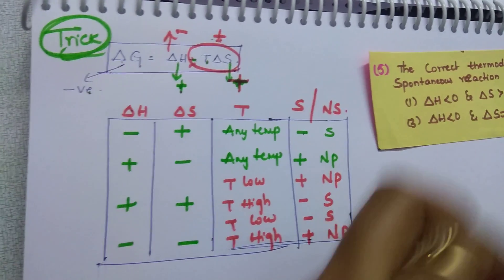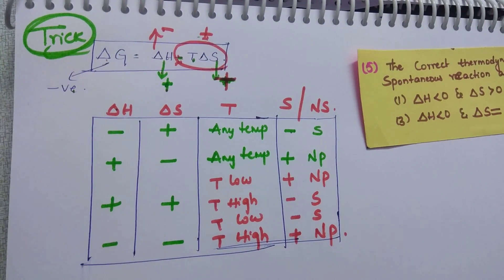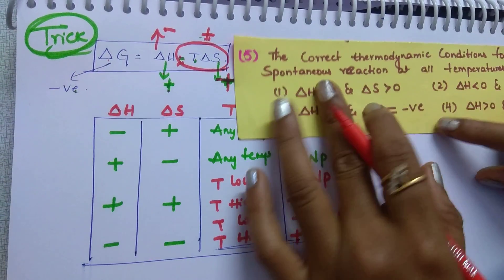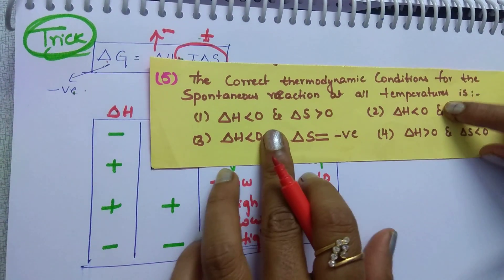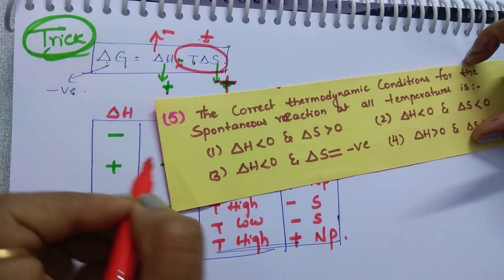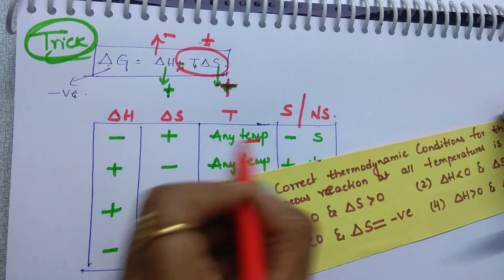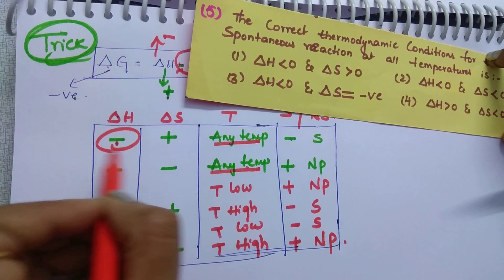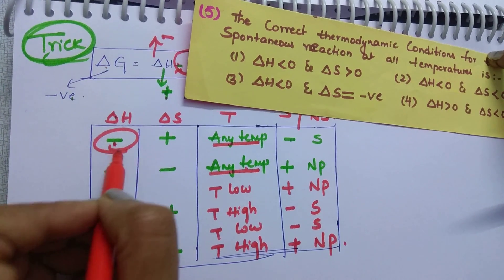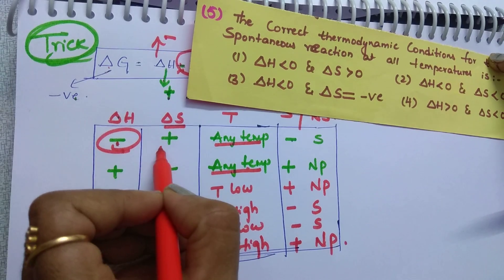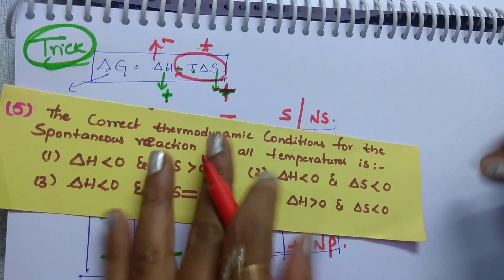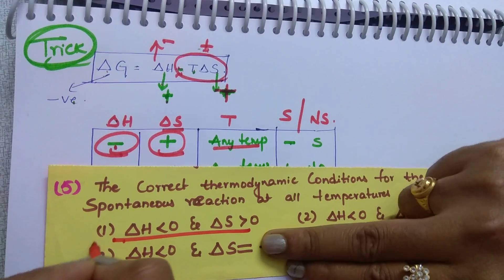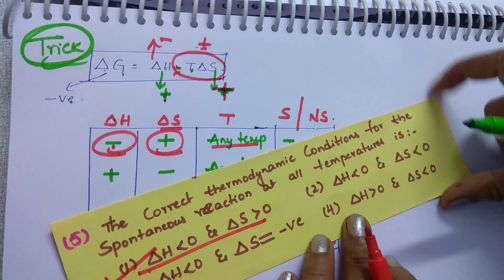This box helps you solve most questions from this topic. To make the reaction spontaneous at any temperature, delta H should be less than 0 (negative) and delta S should be greater than 0 (positive). That is your answer.